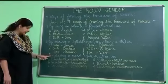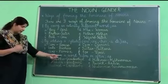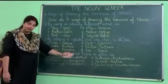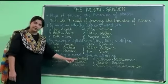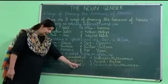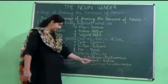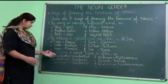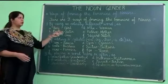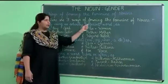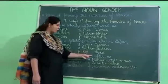Number three: by placing a word before or after. For example, Grandfather becomes Grandmother — you have changed the word after. Great uncle becomes Great aunt. Landlord becomes Landlady. Milkman becomes Milkwoman. Peacock becomes Peahen. Washerman becomes Washerwoman. So the three ways to form the feminine of nouns are: number one, by using an entirely different word; number two, by adding a syllable; number three, by placing a word before or after.